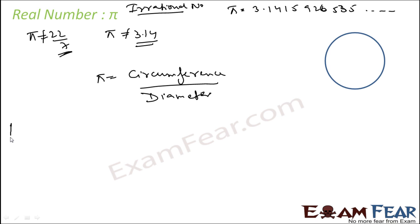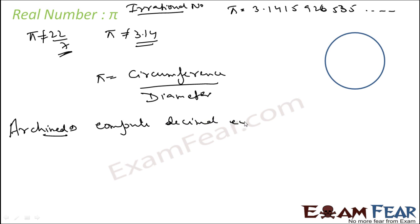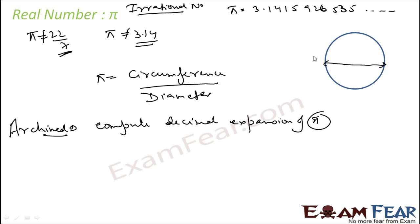If you see the history of Pi, Archimedes was the first to compute the decimal expansion of Pi. How will you compute it? You take any circle, measure the diameter, measure the circumference, divide these numbers and you will get the value of Pi. You measure this length, divide, and you will get Pi.